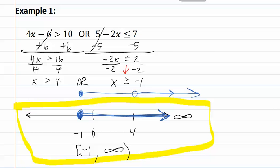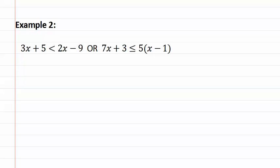Let's look at example two. Here's example two. Let's solve each of the inequalities. Subtract 2x which gives you x plus five is less than negative nine.